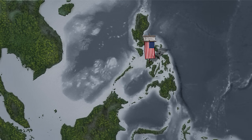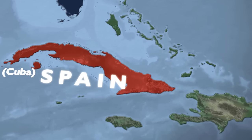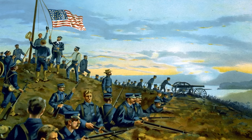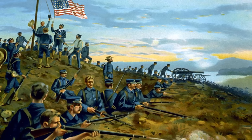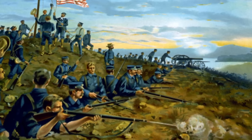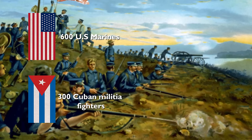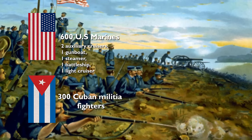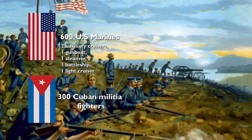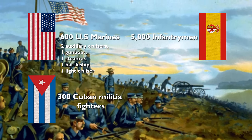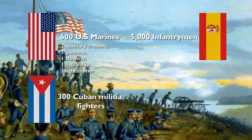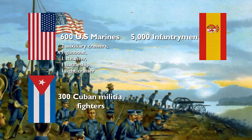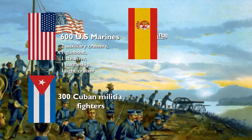Back in June, after the first battle at Manila Bay, the US had focused their efforts on the Spanish stronghold of Guantanamo Bay in Cuba. Conflict officially broke out on June 6th and lasted until June 10th, with the results being less innocuous for the Americans this time. At the start of the battle, the US troops were heavily outnumbered in terms of manpower, with a mere 600 marines and 300 Cuban militia fighters, though they also possessed two auxiliary cruisers, one gunboat, one steamer, one battleship, and one light cruiser. The Spanish personnel amounted to 5,000 infantrymen, as well as seven artillery pieces, one shore battery, one blockhouse, and one fort. Despite their disadvantage, the American naval troops entered the bay on June 6th and successfully attacked a Spanish blockhouse with their light cruiser, and any Spanish vessels attempting to intervene did so in vain.